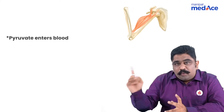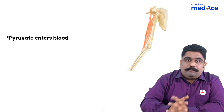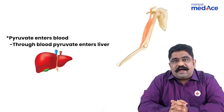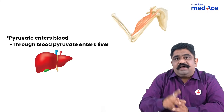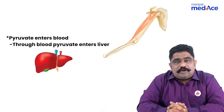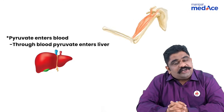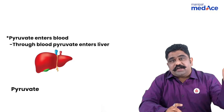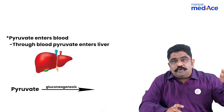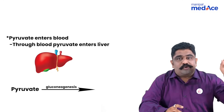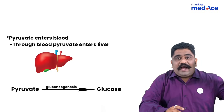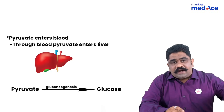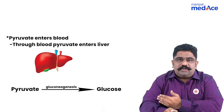Now that alanine will travel through the blood and enter into the liver. In the liver, that alanine will go for deamination to become pyruvate. That pyruvate will go for gluconeogenesis to produce glucose, and that glucose will come into the blood and again enter back into the muscle.